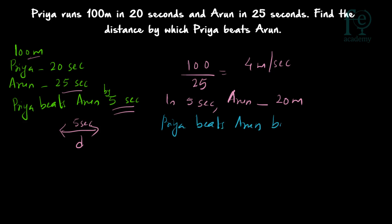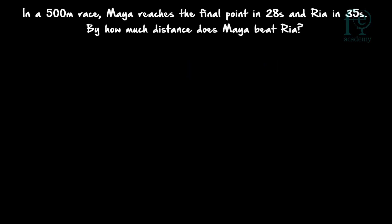So we got our answer. The distance is not directly given but the time is given. By what time Priya is beating Arun is given and you are asked to find out the distance. So find the opponent's speed — the speed of the opponent multiplied by that time difference of 5 seconds. Arun will be running 20 meters in 5 seconds, so Priya beats Arun by 20 meters.